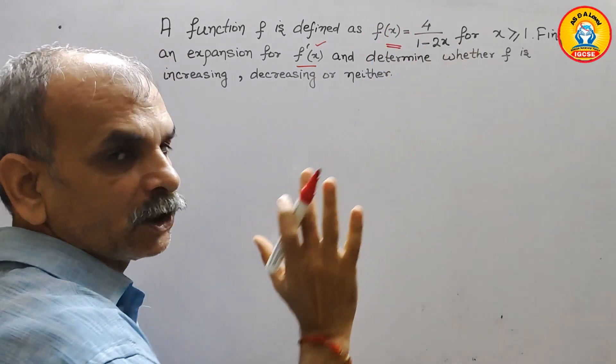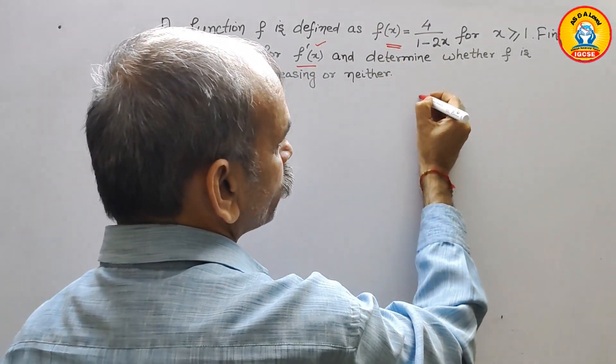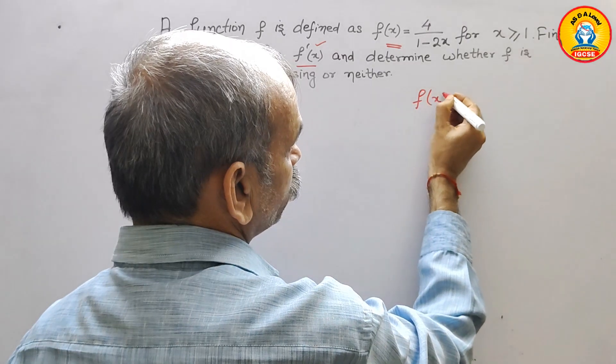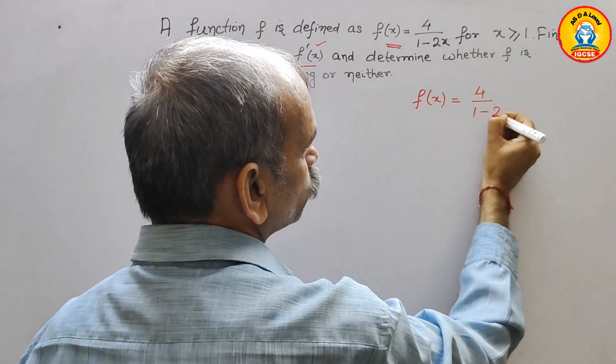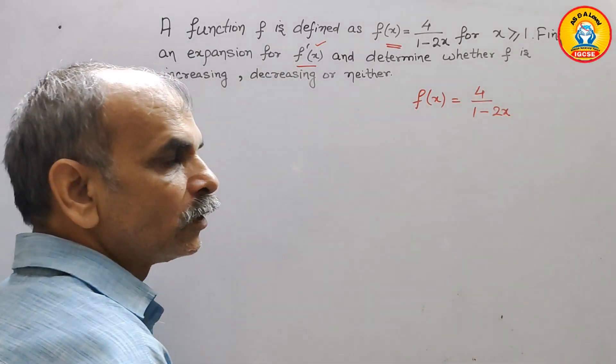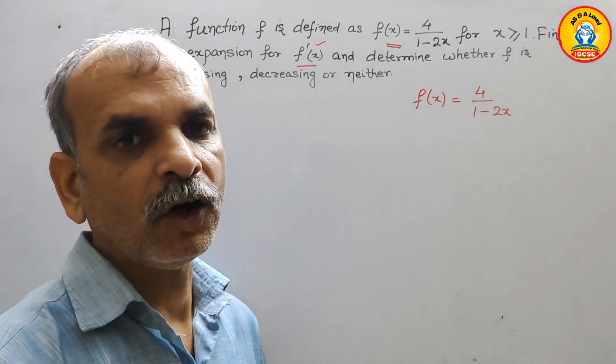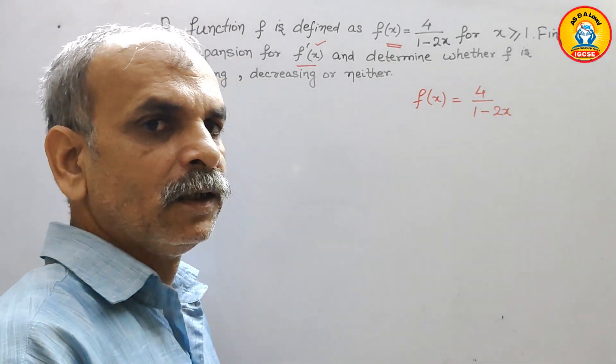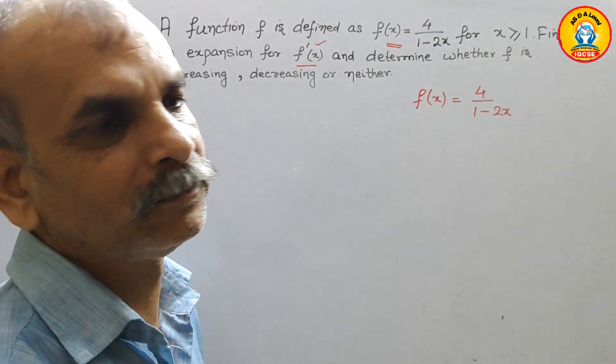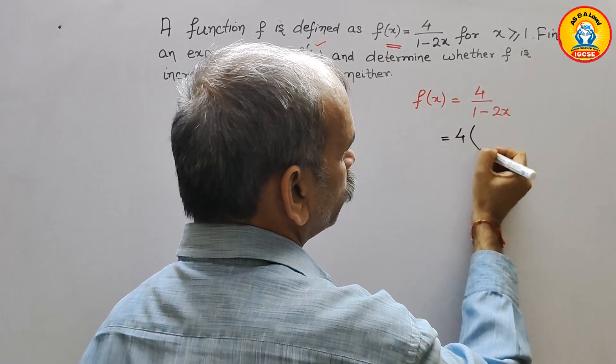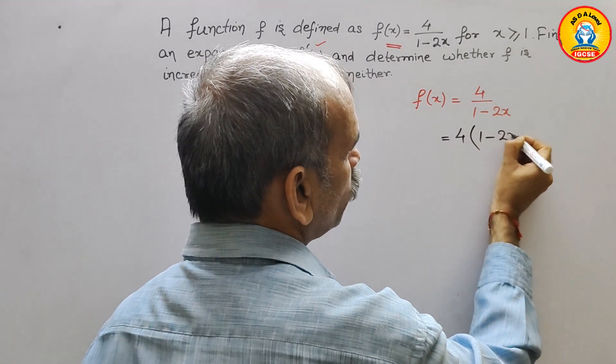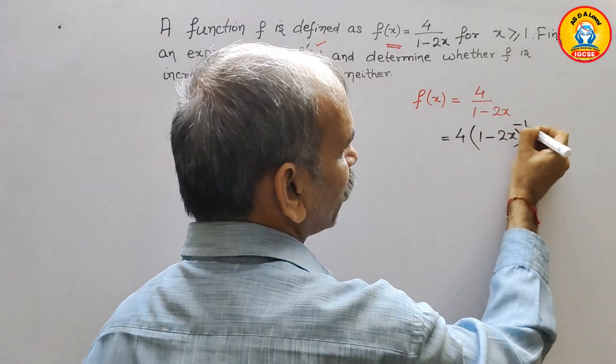So just what they have done? We will write that f(x) equals 4 over 1 minus 2x. Now we will rewrite it. We will bring denominator to numerator. So here it will come as 4 times (1 minus 2x) and power is minus 1.